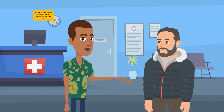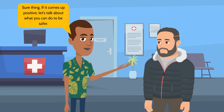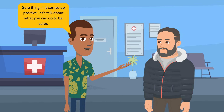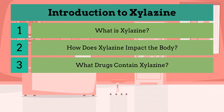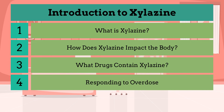There are xylozine test strips to test for the presence of xylozine, but because the drug supply is unregulated, there is no way to know how much xylozine is present. When xylozine is mixed with opioids, responding to an overdose can look a little different. Let's go over what you need to know to act quickly and safely in an emergency.